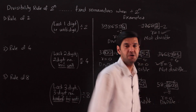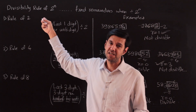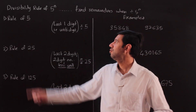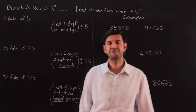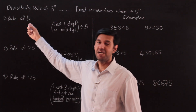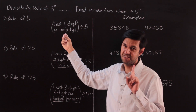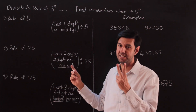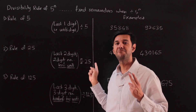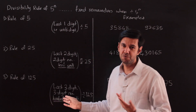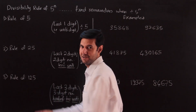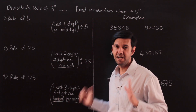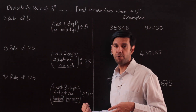The divisibility rules for powers of 5 — that is 5, 25, 125, 625 — work identically to the rules for powers of 2. To check if a number is divisible by 5, check the last single digit. To check divisibility by 25 (5 squared), check the last two digits — the two-digit number formed by tens and units — and see if it's divisible by 25. For 125 (5 cubed), check the last three digits: the hundreds, tens, and units forming a three-digit number should be divisible by 125.